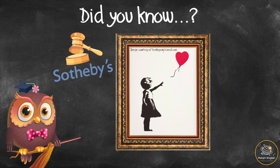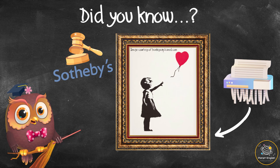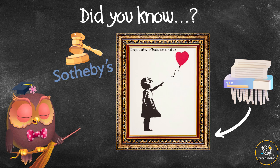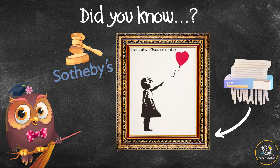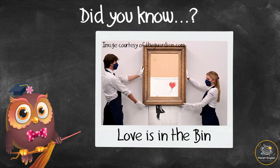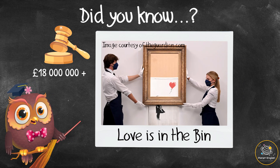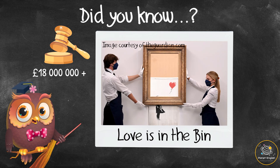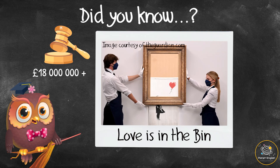A framed copy of Girl with Balloon was put up for auction at Sotheby's in 2018. However, Banksy had hidden a device in the frame which started to shred the picture during the auction. It was then renamed Love is in the Bin. It was sold again at auction in 2021 for over 18 million pounds — the highest amount paid for one of Banksy's artworks.